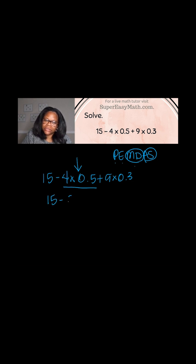So it's 15 minus 2 plus 9 times 0.3. Now I'm going to continue with my order of operations. I'm going to continue with multiplication, and I can see that I have some here. So that's 9 times the 0.3.